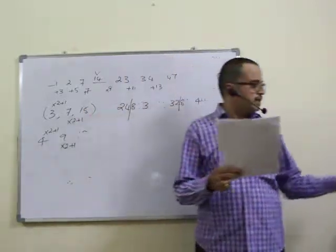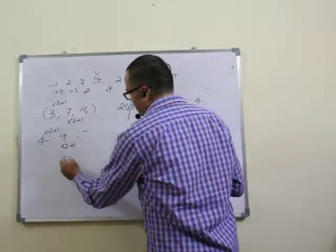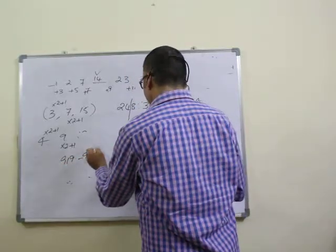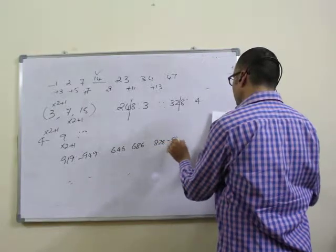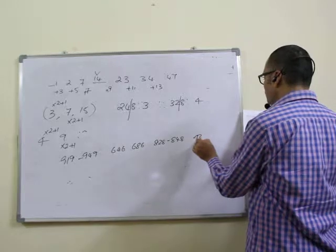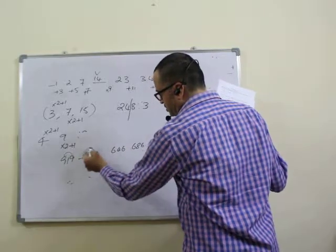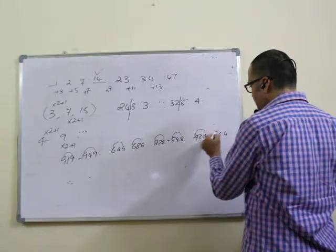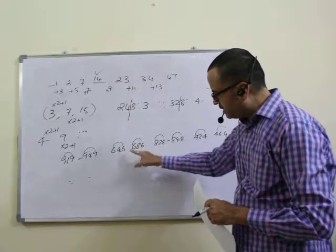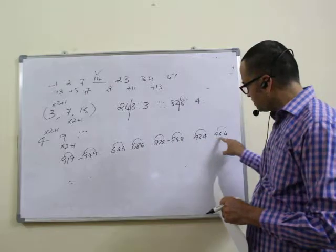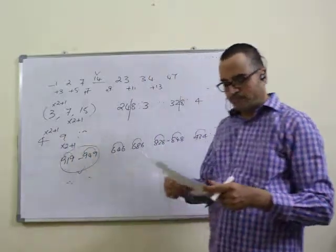Question eight: select the odd one out. Options include 919, 949; 646, 686; 828, 848; 434, 464. In all cases the first and last digits are the same, and the middle digit is double the outer digit — double of four is eight, double of two is four, double of three is six. But for one option, double of one is two — that doesn't fit. So that is the odd one out. Answer is first option — eighth question, first option.